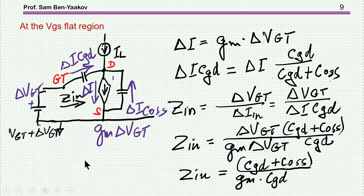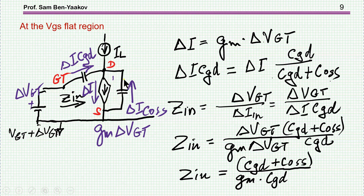Let's have a look at what the input impedance is when we look into the gate during this flat VGS portion. To find the impedance, I'm doing a perturbation — adding some voltage to the input. As a result of this added voltage, we'll have an added current here, and this added current will cause a change in the current here and a change in the current here. The sum of these is equal to this constant — I'm just talking about the perturbation. This reflects into two currents, divided by the capacitor values — like a capacitive current divider.